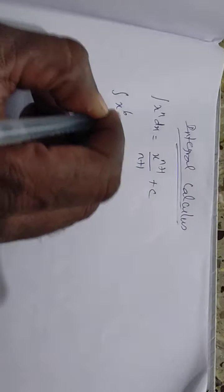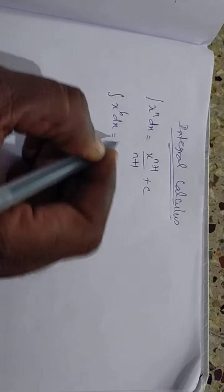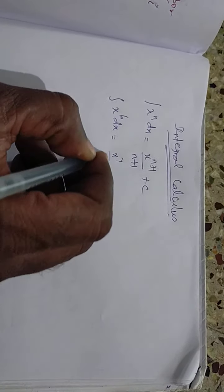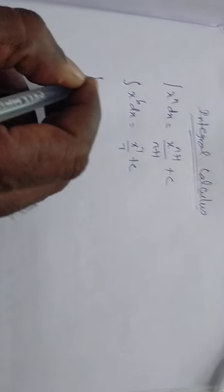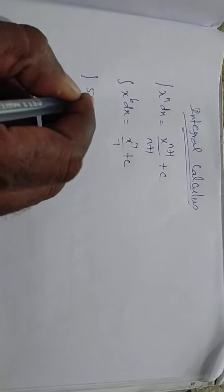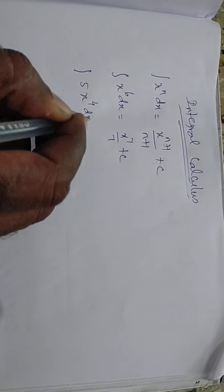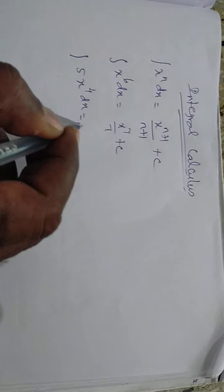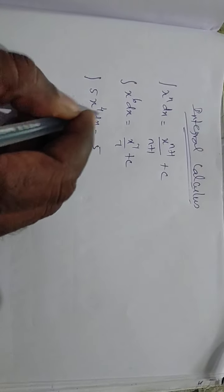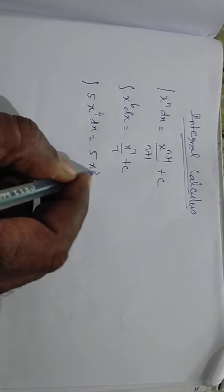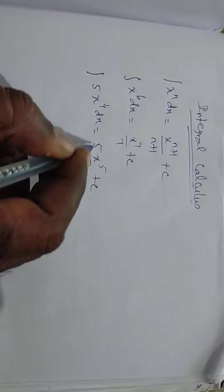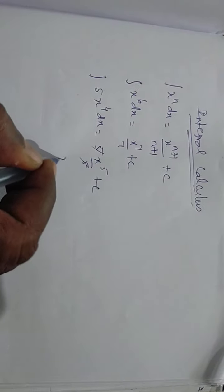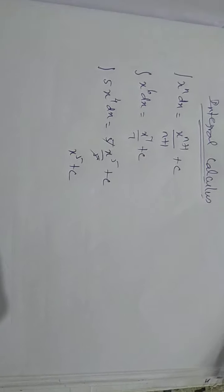Suppose, the integral of x power 6 dx is equal to x power 7 by 7 plus c. Suppose, with constant 5: the integral of 5x power 4 dx is equal to x power 5 by 5 plus c. Now we can cancel 5 by 5, so the answer is x power 5 plus c.